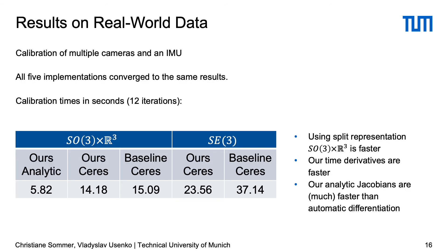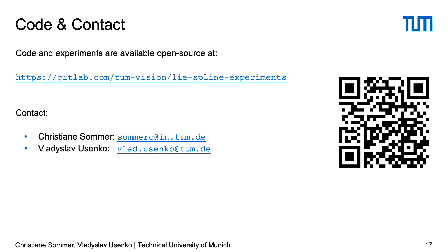Looking at the timing, we compare the split representation, which does not couple rotations and translations, with the SE(3) representation. The results show that the split representation is much faster in all cases and the proposed approach to compute time derivatives outperforms the baseline. Using analytic rather than automatic differentiation, we observe a further speedup. The code for the spline implementations and the presented experiments is provided open source at the link below. Thank you for your attention.